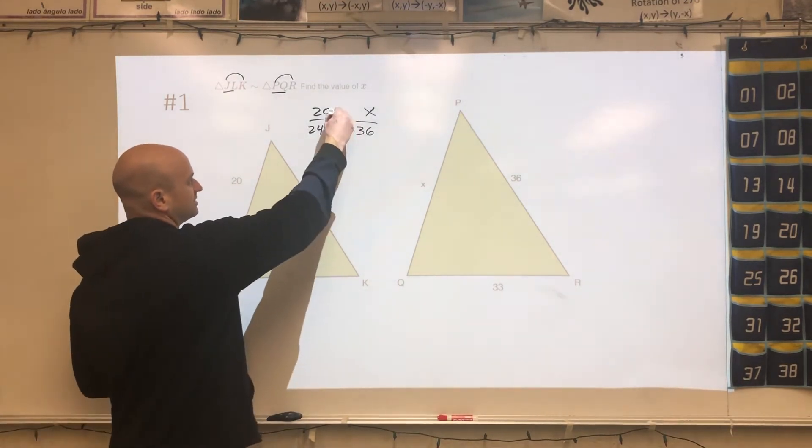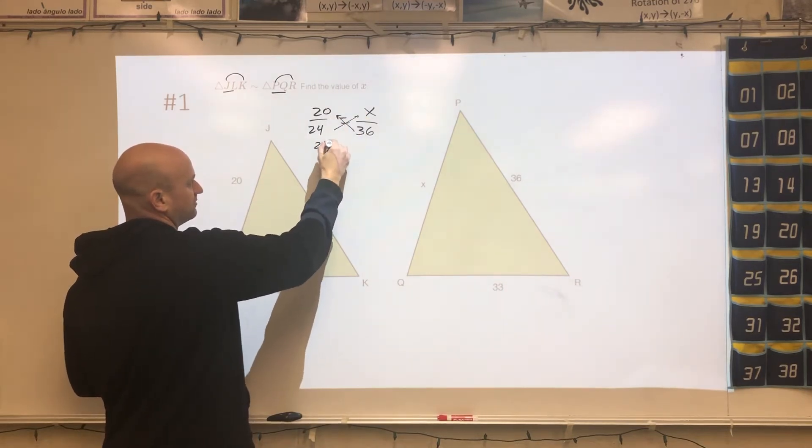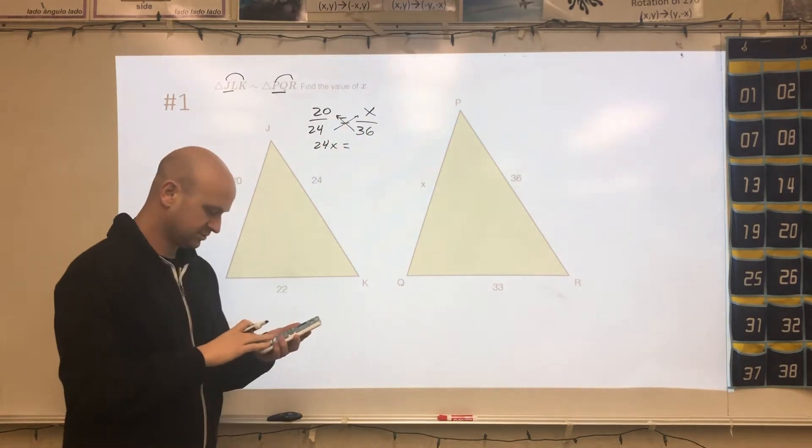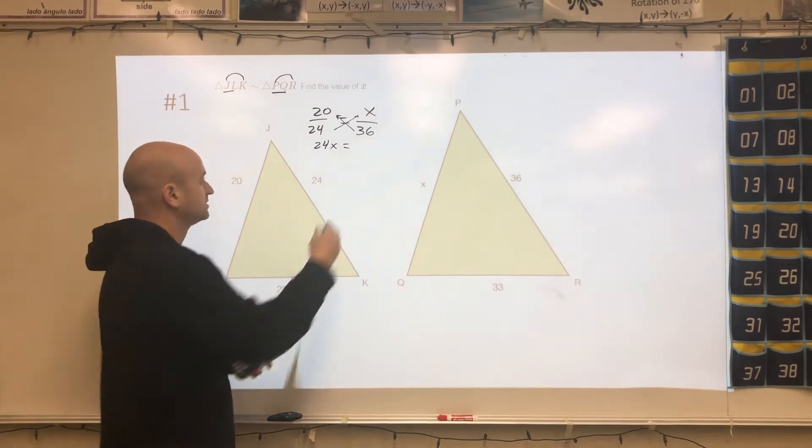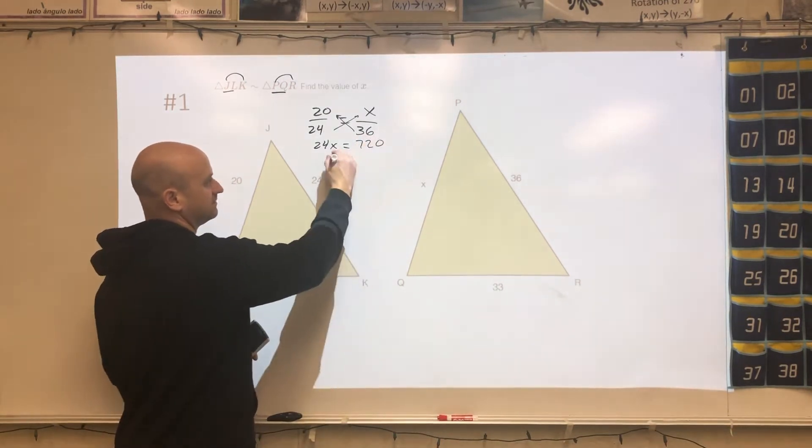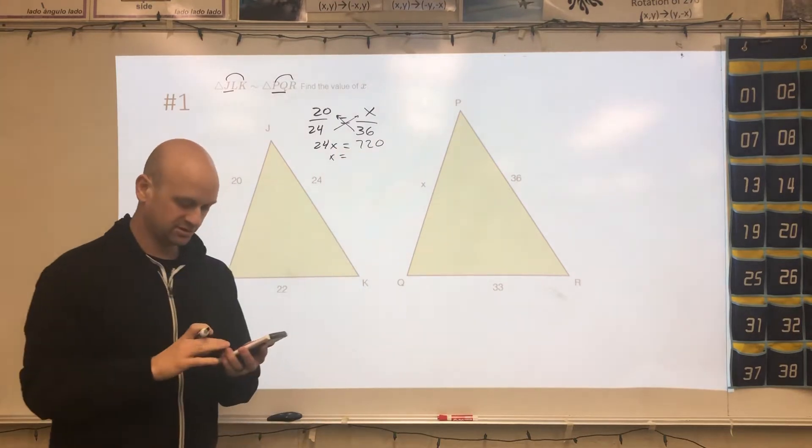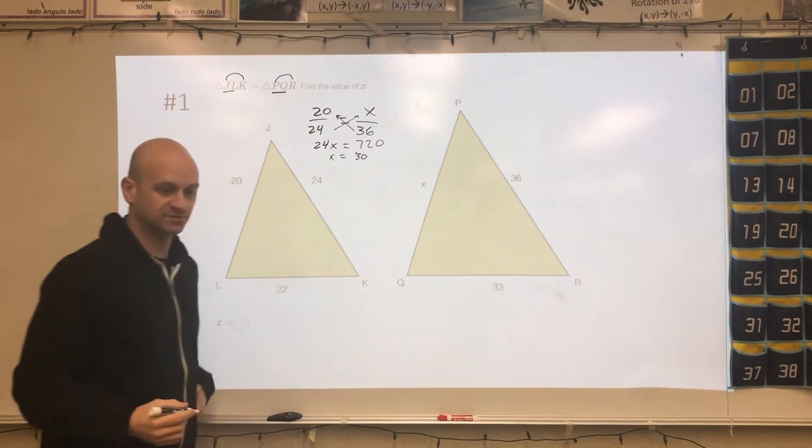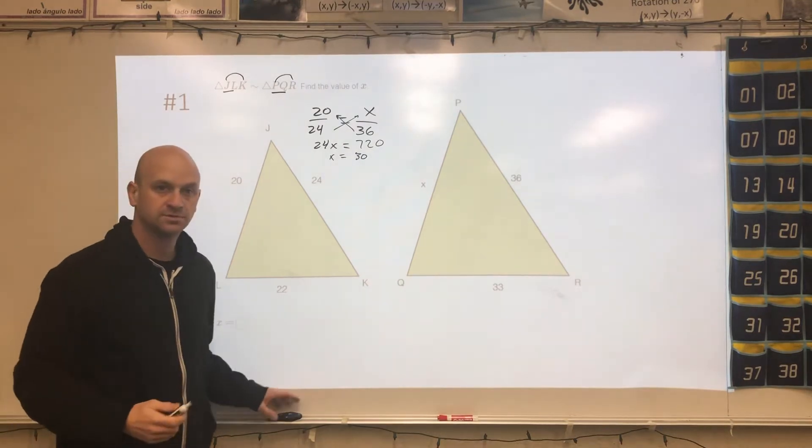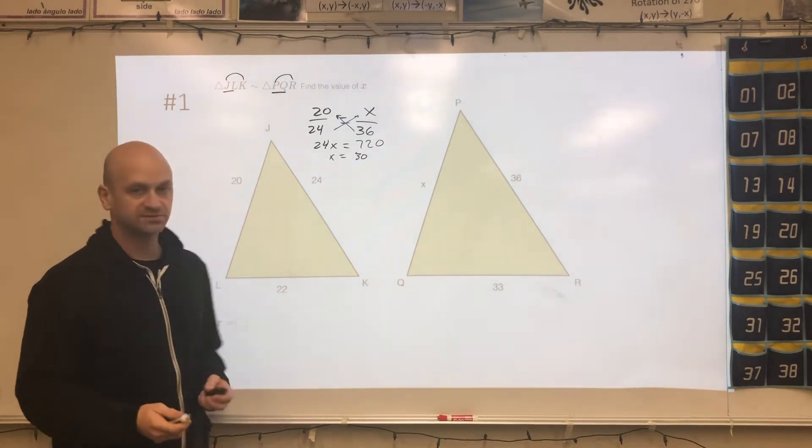So now we have our proportion set up. You could have also partnered 22 with 33 if you wished and got the same thing. Now we're going to cross multiply these, and I get 24X equals 720, and then divide by 24, and I get X equaling 30.